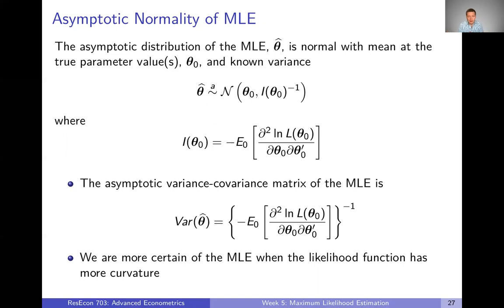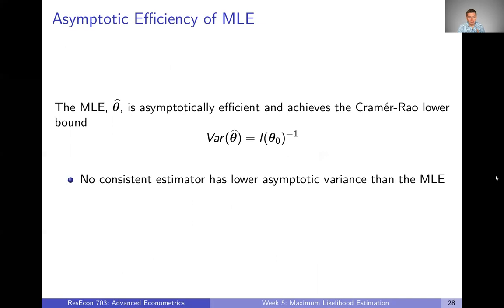But basically the super high level here is that we are more certain of the maximum likelihood estimator. The variance is smaller when the likelihood function has more curvature. So when we can really easily define where a maximum occurs, whereas when it's pretty flat and it's harder to determine is this the maximum or is something nearby also, could that be the maximum when there's less curvature there, the variance is relatively large. I think that'll make more sense in the next video, but having an asymptotically normal distribution with known mean and variance is very useful in terms of estimating the variance.